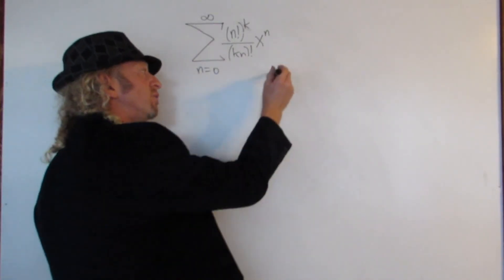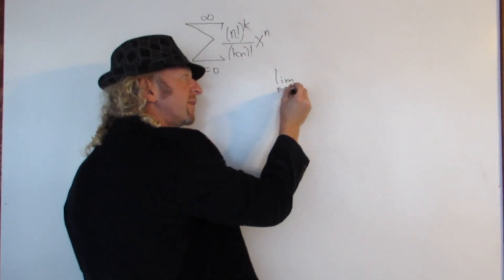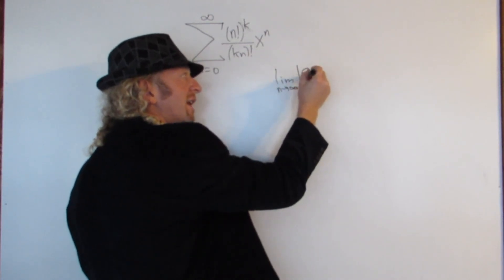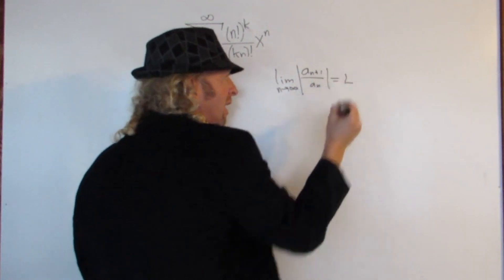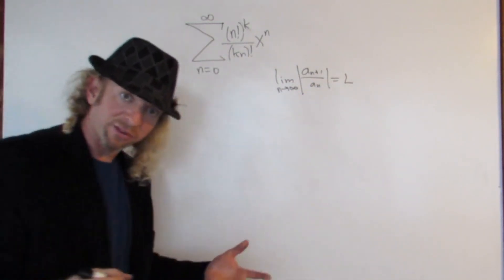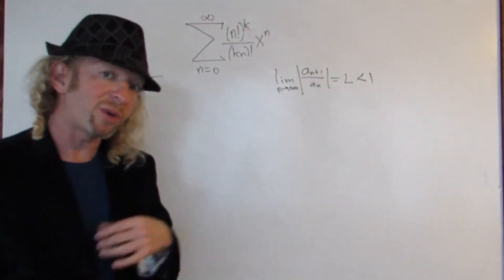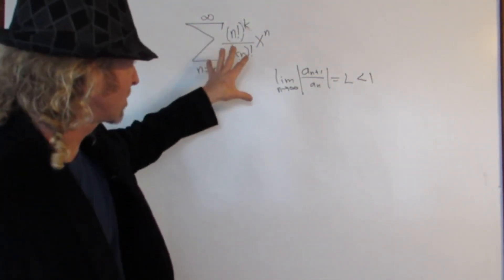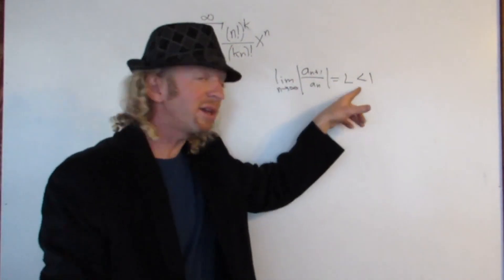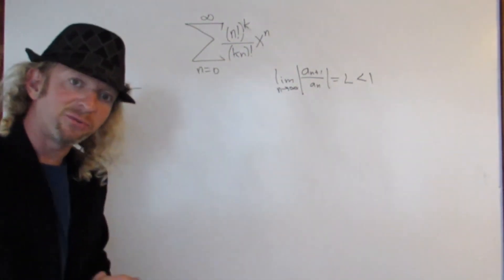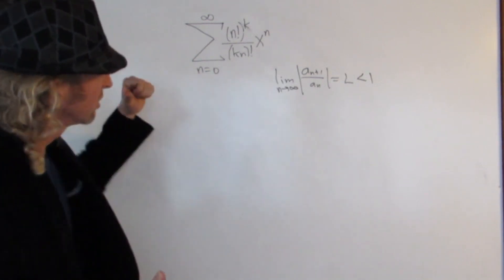Recall the ratio test says if you take the limit as n approaches infinity of the absolute value of a sub n plus 1 over a sub n and you get L: if it's less than 1 we have convergence, if it's bigger than 1 we have divergence, and if it's equal to 1 we have no info. We're going to use the ratio test on this, set everything less than 1, then solve for x to find the interval and then from there find the radius. So let's do it.